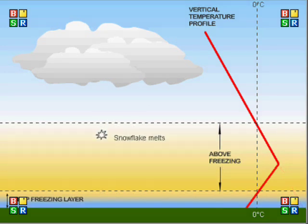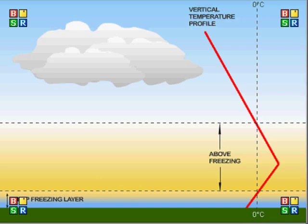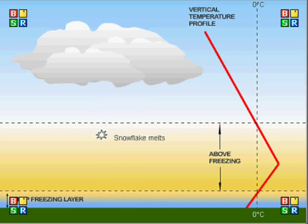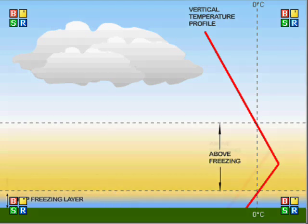The next temperature profile will be that of freezing rain. In this profile, the snow descends until it reaches an above freezing layer at approximately 1700 meters, at which point the snow melts. However, as it approaches 500 meters above the Earth's surface, there will be a shallow deep freezing layer present, causing these rain droplets to slightly freeze, resulting in freezing rain.